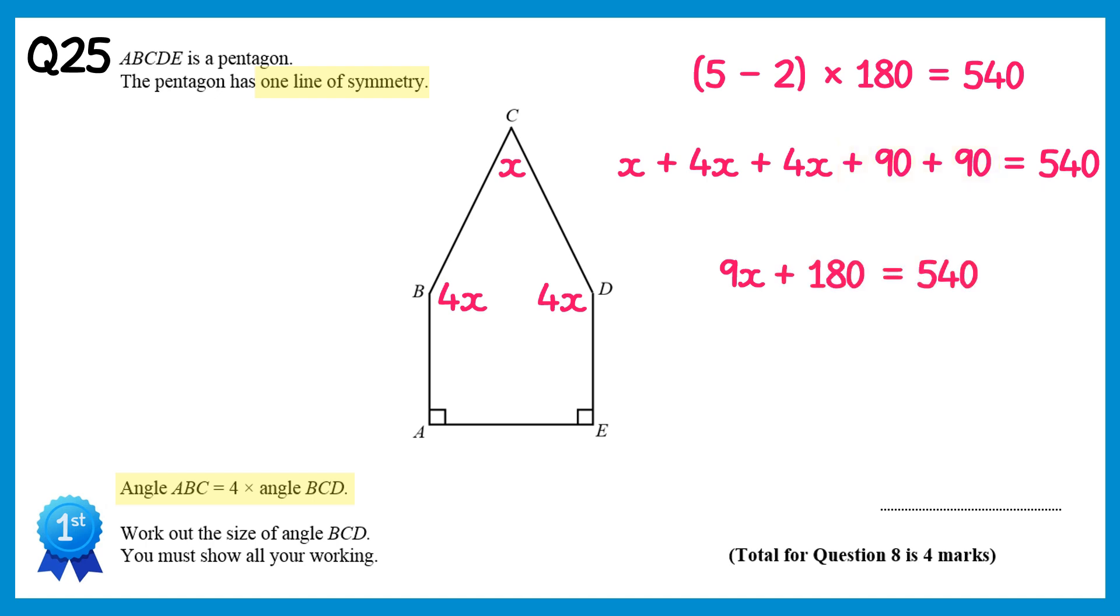So now we have an equation to solve. First of all take away 180 from both sides. On the left side this will give 9x, and on the right side 540 take 180 gives you 360. Now divide both sides by 9. On the left this gives you x, and on the right 360 divide by 9 gives you 40. The angle we were asked for in the question is BCD, which is labelled x in the diagram, so we've now found it. It's 40 degrees.